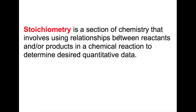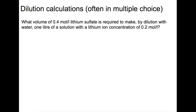I'm going to go through a series of different stoichiometric calculations that you might be asked to do. The first we're going to look at is dilution calculations, and these often come up in the multiple choice section of Advanced Higher Chemistry. For this first calculation, what you need to do first of all is write out the formula for the chemical you've been given. Here we have lithium sulfate — lithium has a valency of one and sulfate has a valency of two.